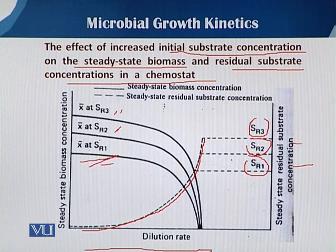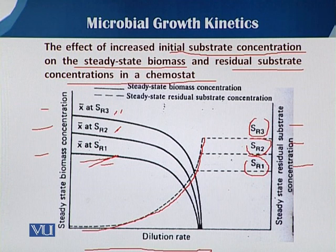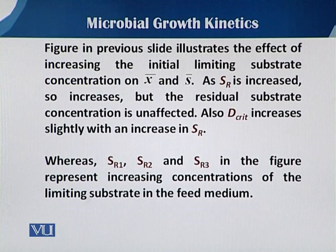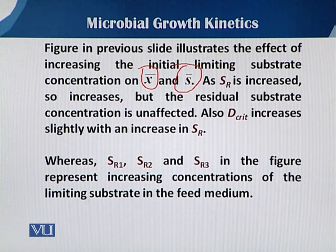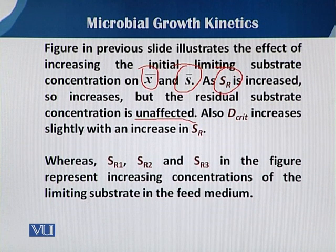Mu_max changes across those three stages — this is the effect of the initial substrate concentration, and it is very critical how we start our fermentation in continuous mode. The effect of increasing the initial substrate concentration on X-bar and S-bar — that is, biomass concentration and residual substrate concentration at steady state — is as follows: as SR is increased, the residual substrate concentration is unaffected, but the critical dilution rate increases slightly with an increase in SR.